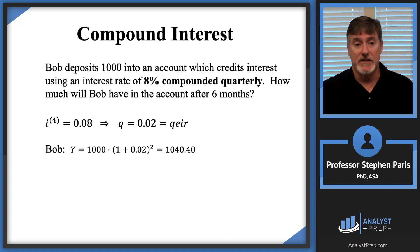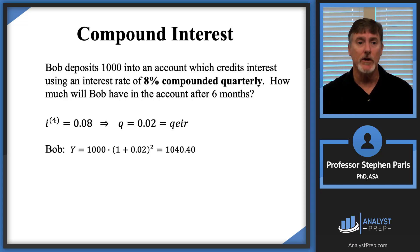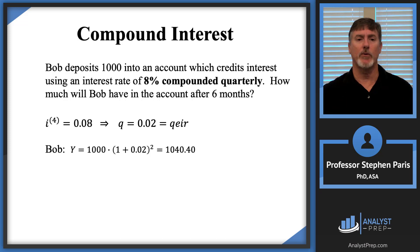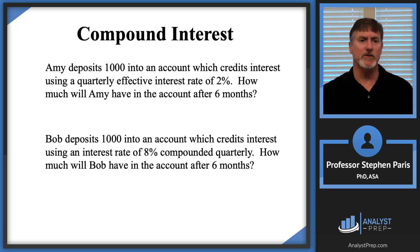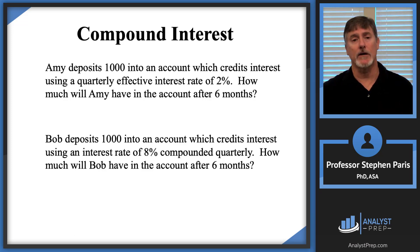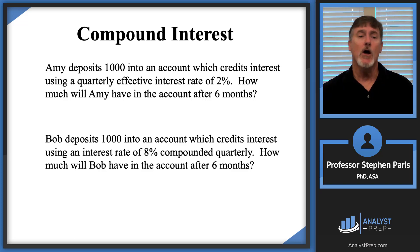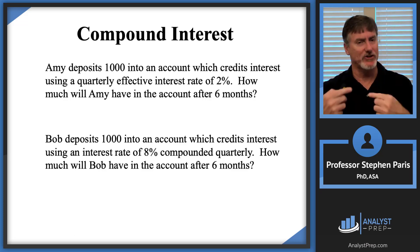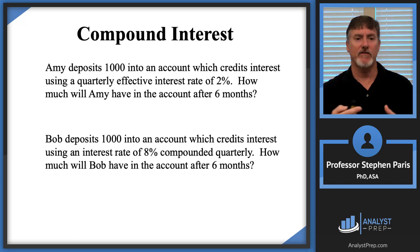So Bob's accumulated value is Y = 1,000 × (1 + 0.02)^2 = 1,000 × (1.02)^2 = $1,040.40 — exactly the same as Amy's problem. Comparing the two: Amy's rate was given directly as a 2% quarterly effective interest rate, while Bob's rate required one extra step — dividing the nominal 8% by 4 to obtain the 2% quarterly effective rate — before using the same accumulation formula.